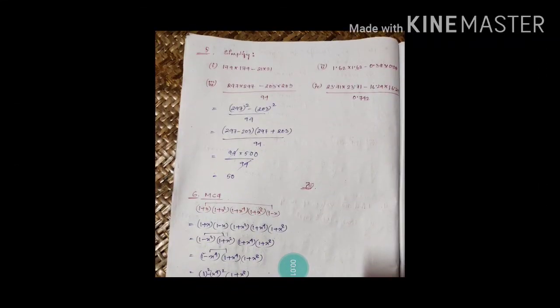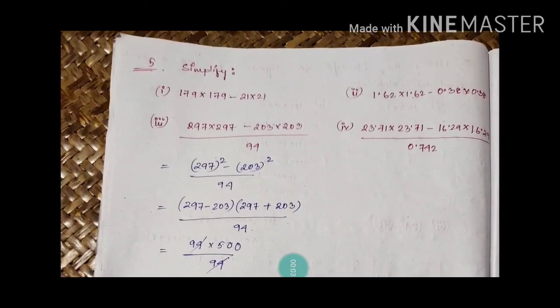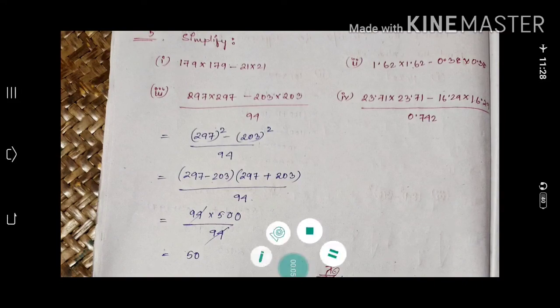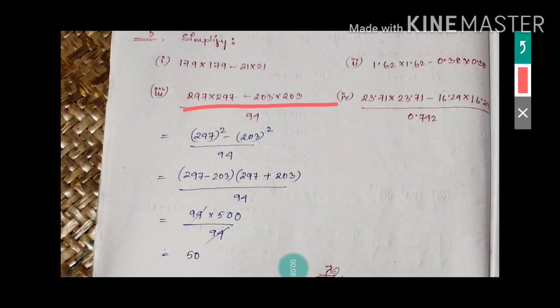Question number five: three numbers to simplify. You have to do the simplifications. First of all, before doing these problems you have to observe the terms — 297 into 297 minus 203 into 203. The numerator is given as 297 squared minus 203 squared, divided by 94.